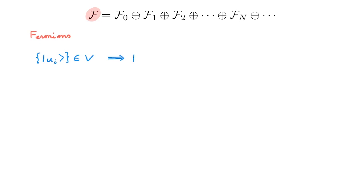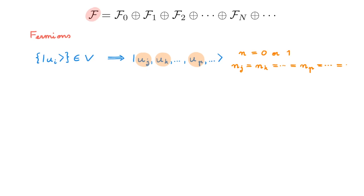We write the Fock state as |uj, uk, ...⟩. For fermions we can write Fock states specifying the single particle states u rather than specifying the occupation numbers, because the occupation numbers n for fermions can only be zero or one due to the Pauli exclusion principle. In this notation we know that the only single particle states that are occupied are uj, uk, and so on, and that each has occupation number equal to one, while all other occupation numbers are equal to zero.